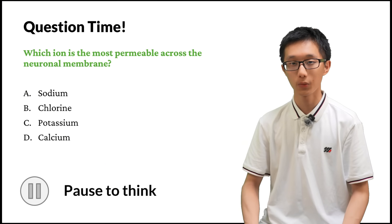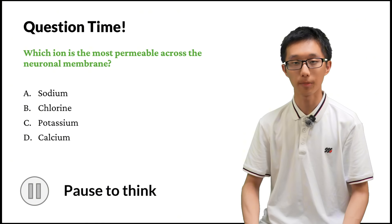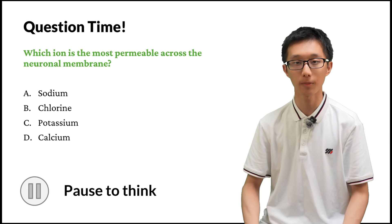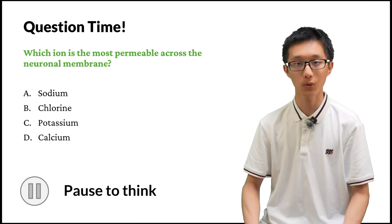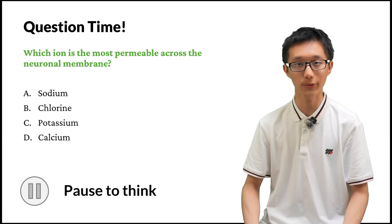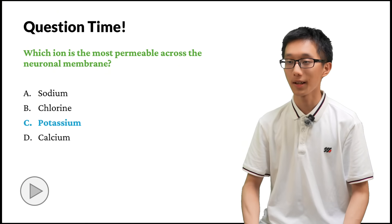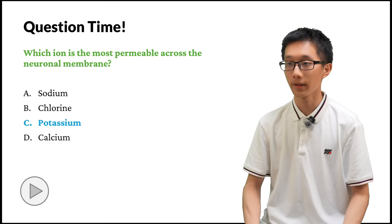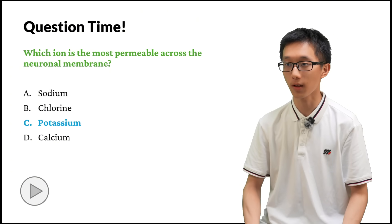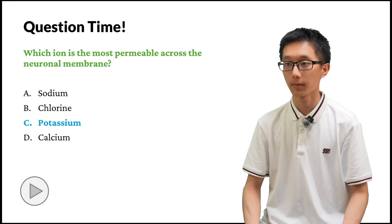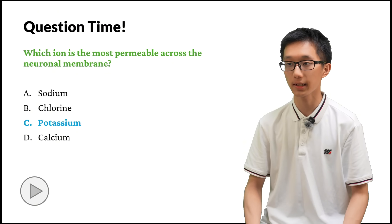Question time: which ion is most permeable to the neuronal membrane — sodium, chlorine, potassium, or calcium? The answer is potassium — there are far more potassium leak channels on the neuronal membrane than for any other ion. By the way, the least permeable ion is calcium, which is very important for synaptic transmission.